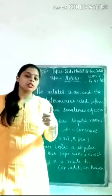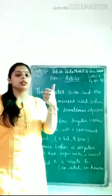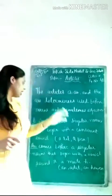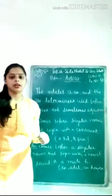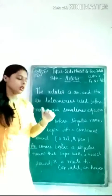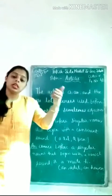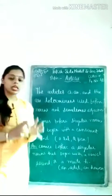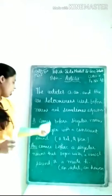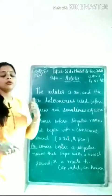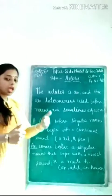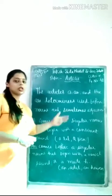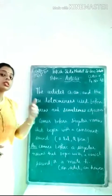We use A with indefinite articles, like for any person — a rat, a pen, a doctor. We use A with singular countable nouns. With singular nouns we use A. The same rule applies for An — with singular nouns we use An, but it should be a vowel sound. And for all consonants, we use A for singular nouns.